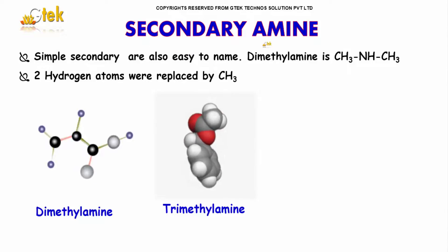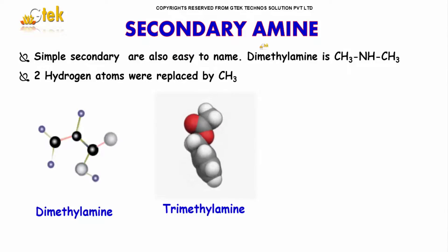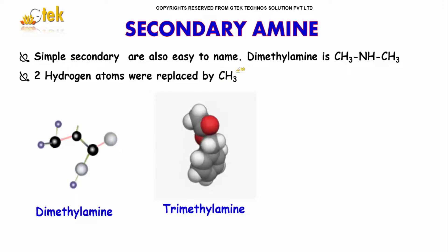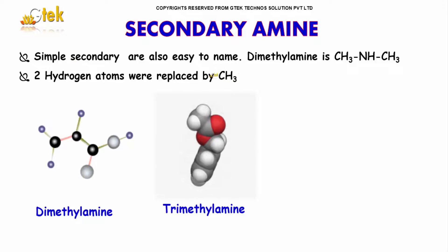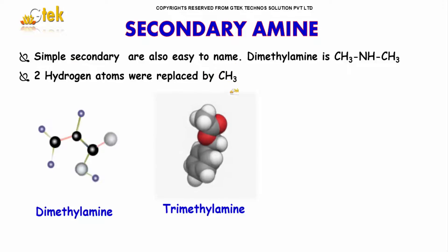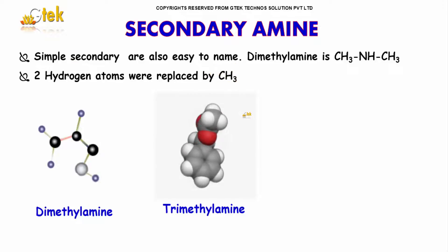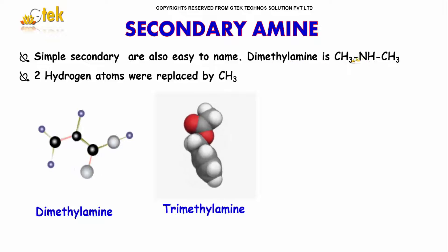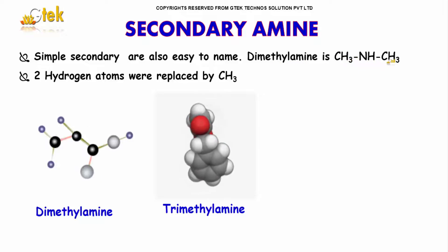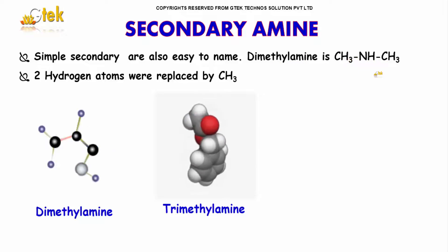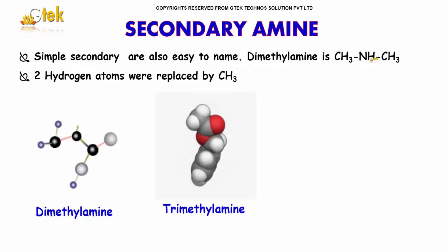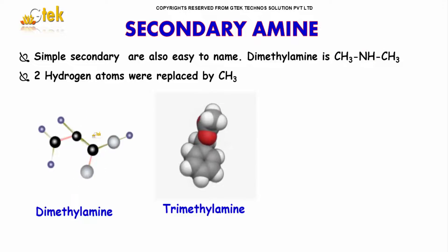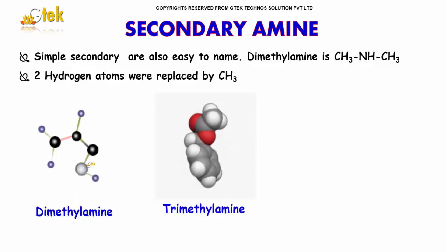For secondary amines, two hydrogen atoms are replaced by CH3 groups in ammonia. The typical example is dimethylamine — methane and methane together give dimethylamine.